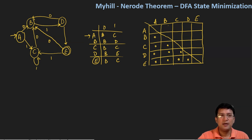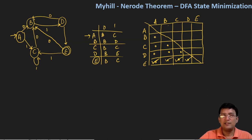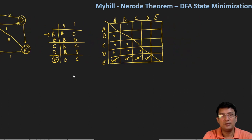Let's see which pairs can be marked. B and A both belong to the non-final state, so they cannot be marked. CA, CB, DA, DB, and DC are also not possible — they all belong to the non-final state. Now the EA combination can be marked because E belongs to the final state and A belongs to the non-final state. Similarly, EB, EC, and ED can be marked: E is the final state and B, C, D are non-final states. So those pairs have been marked. Step two is done.